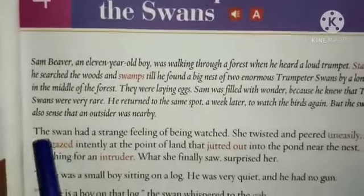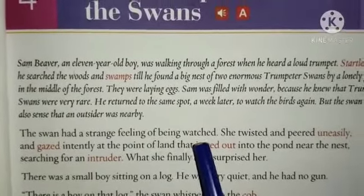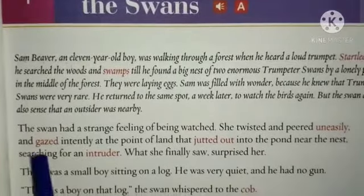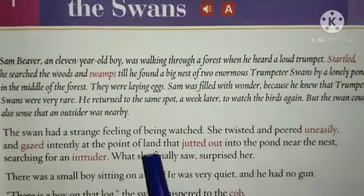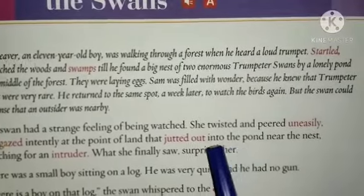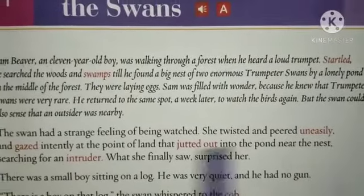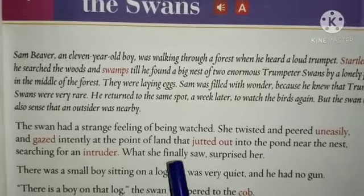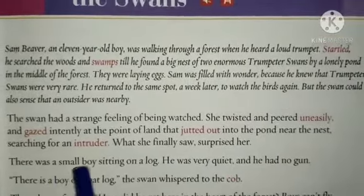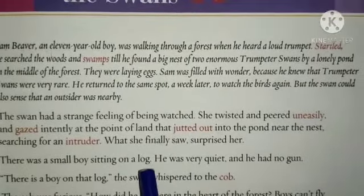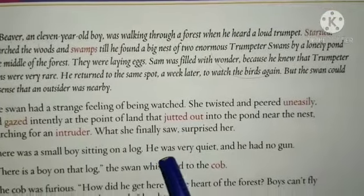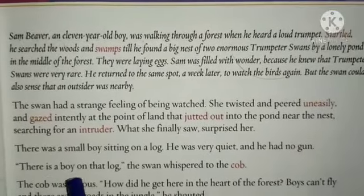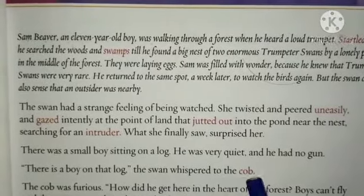But the swan could also sense that an outsider was nearby. The swan had a strange feeling of being watched. She twisted and peered uneasily, and gazed intently at the point of land that jutted out into the pond near the nest, searching for an intruder. What she finally saw surprised her — there was a small boy sitting on a log. He was very quiet and he had no gun. 'There is a boy on that log,' the swan whispered to the cob.